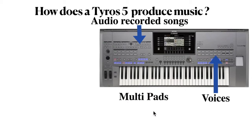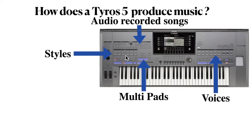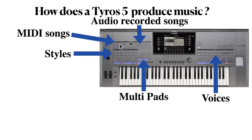There are also things called multipads — I did an entire YouTube presentation on what multipads are a few days ago — controlled by these buttons. I also have styles, controlled by the buttons in here. And finally, I can load in MIDI files and play those songs, controlled by these buttons. So these are the five ways that a Yamaha Tyros keyboard can produce music.